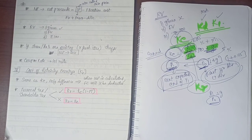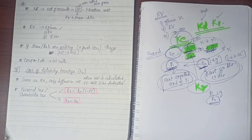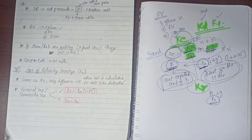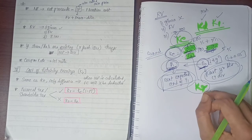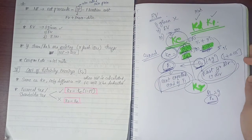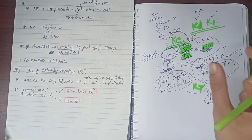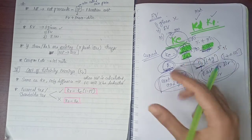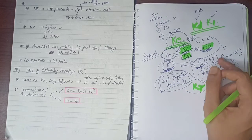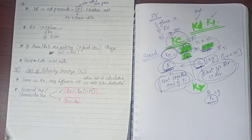So now we have seen individually how all four costs — KD, KP, KE, and KR — are calculated. In the next video, we are going to see how the weighted average cost of capital (WACC) is calculated. In the exam, they won't ask you for these individually — they will ask only for weighted average cost of capital. See you in the next video, guys!